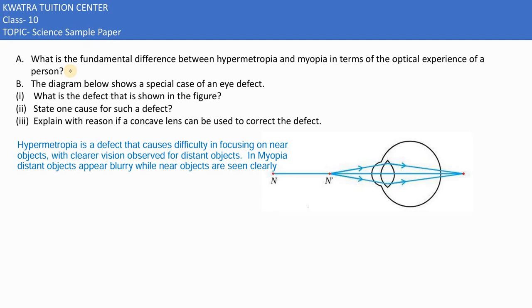Now, in the 31st part, they are saying tell us the difference between hypermetropia and myopia in terms of the optical experience of a person.